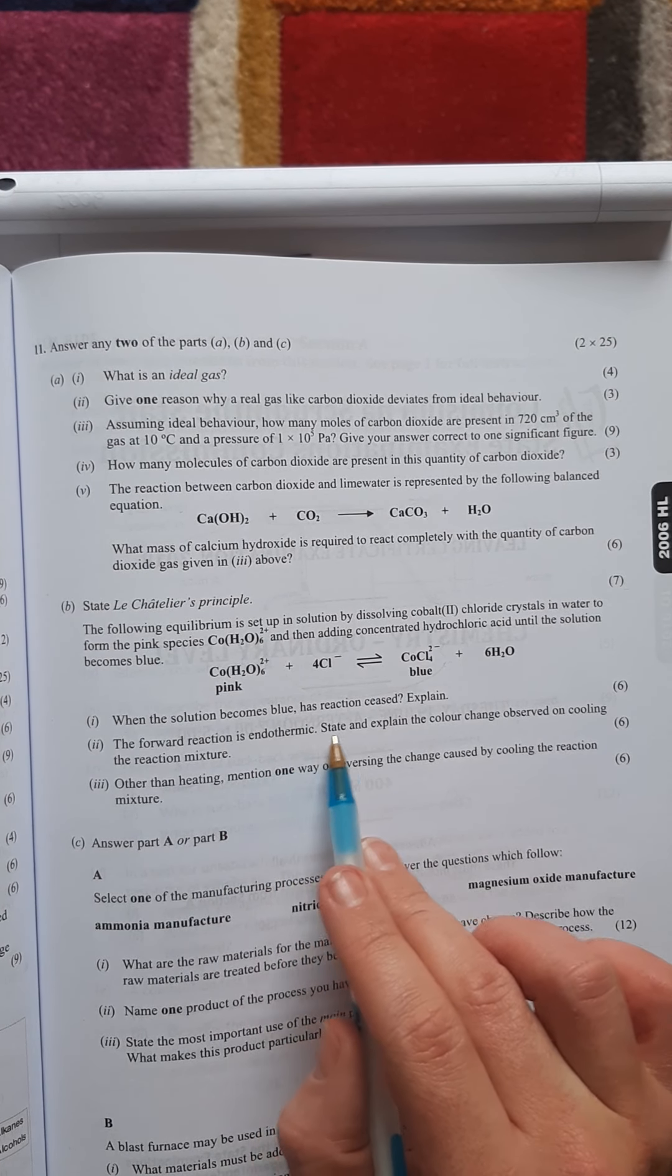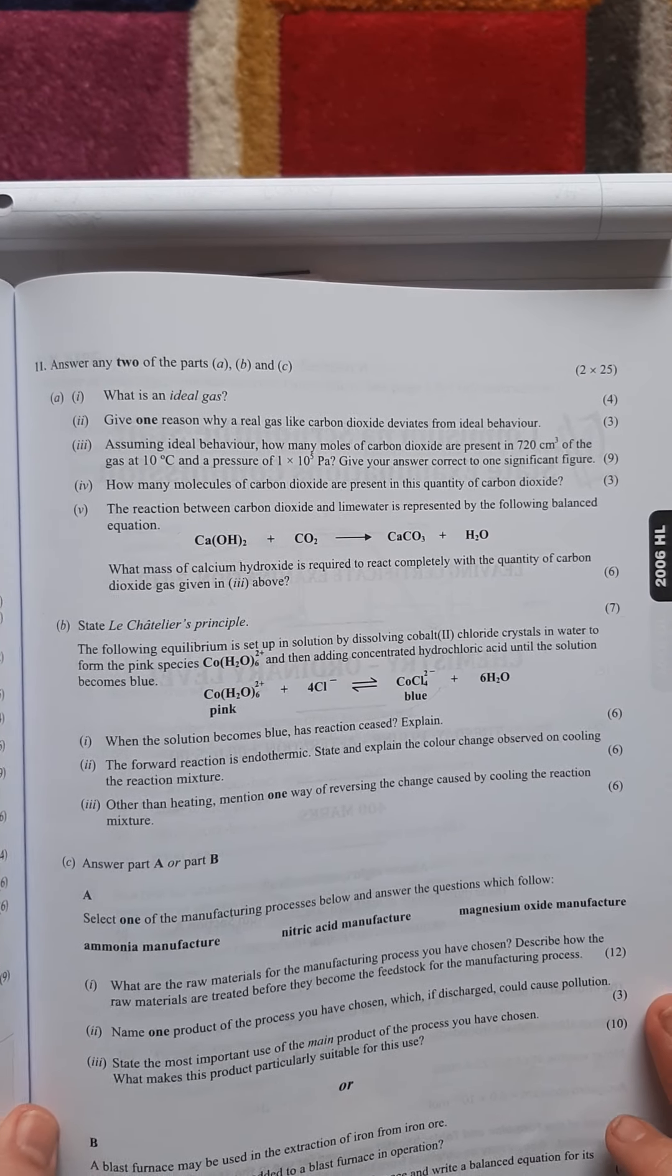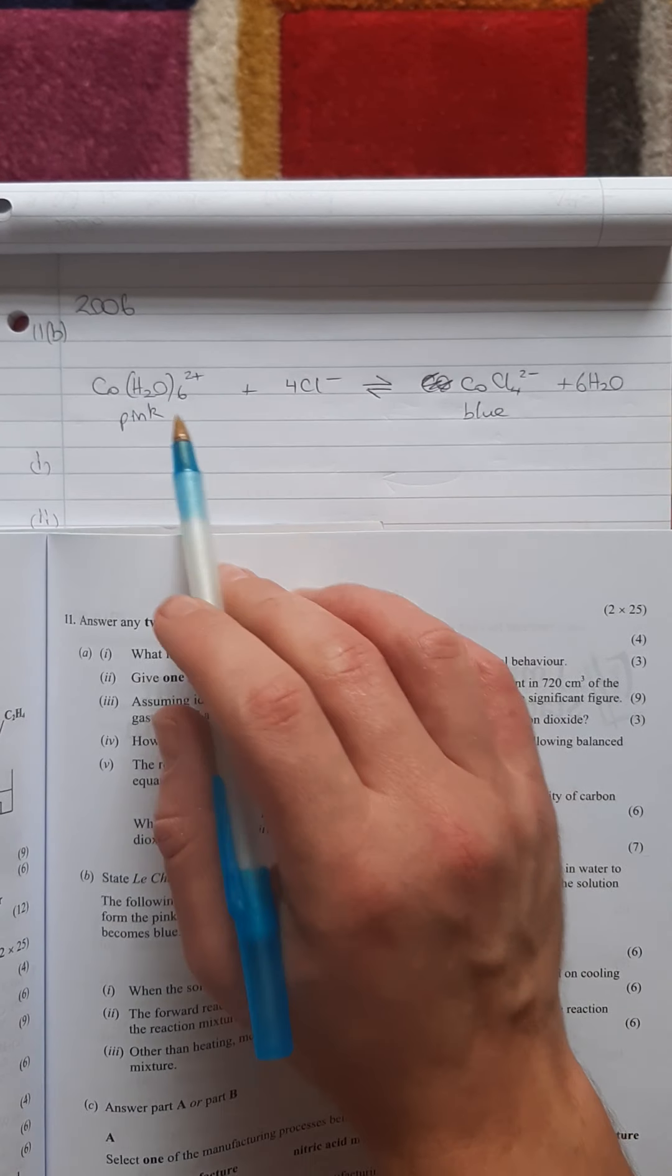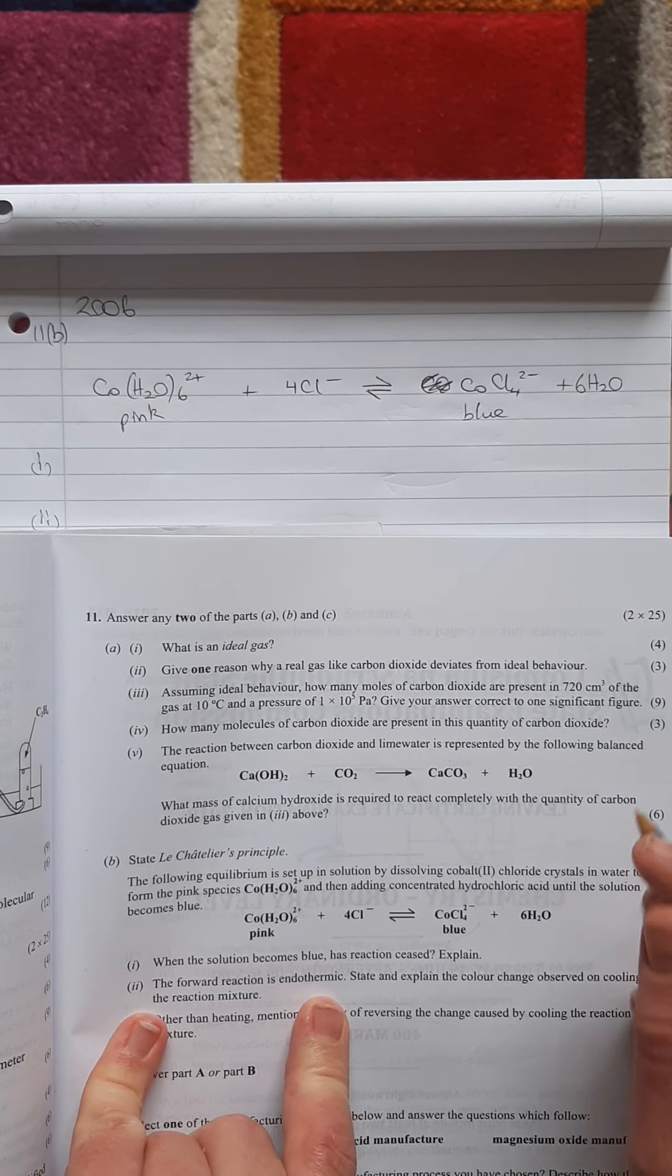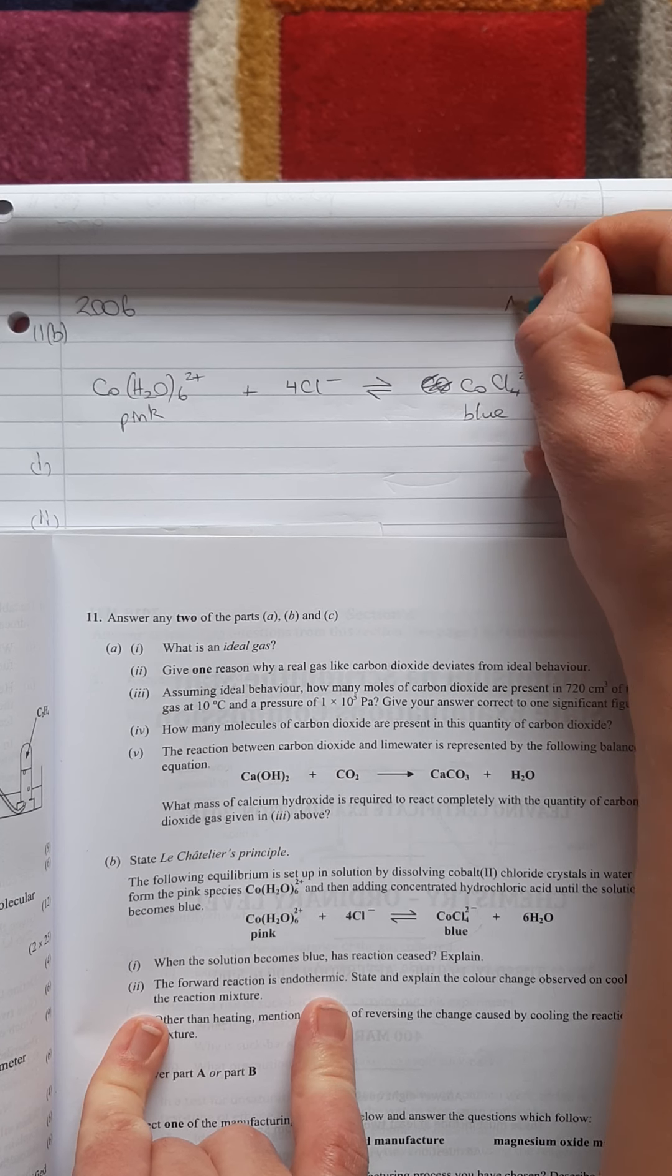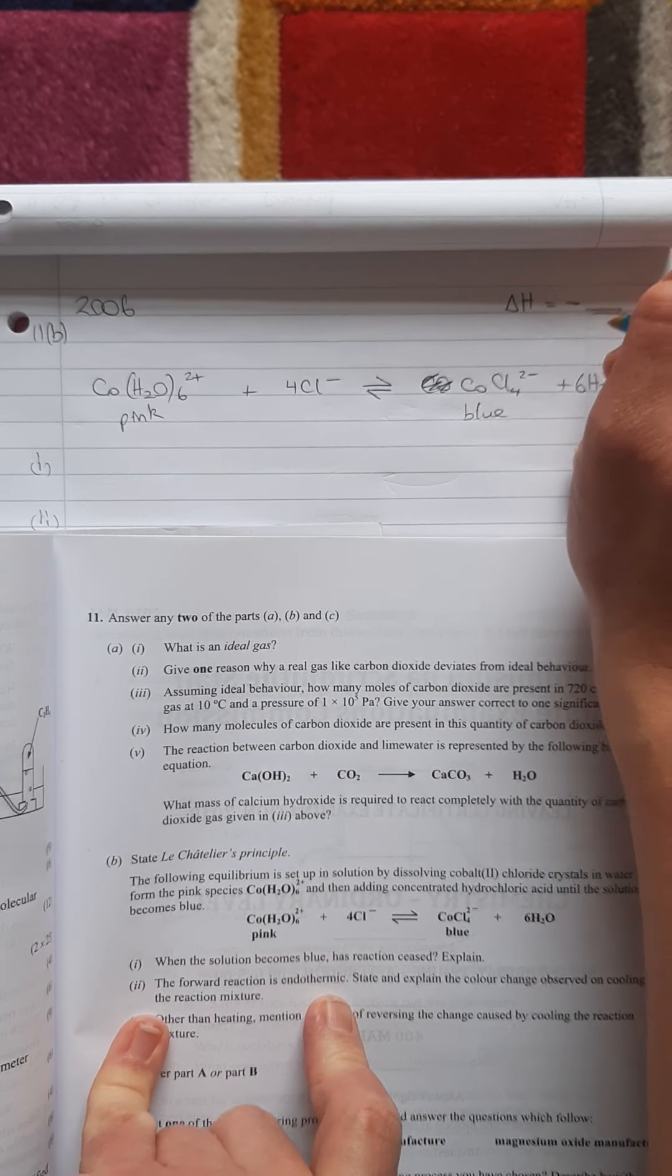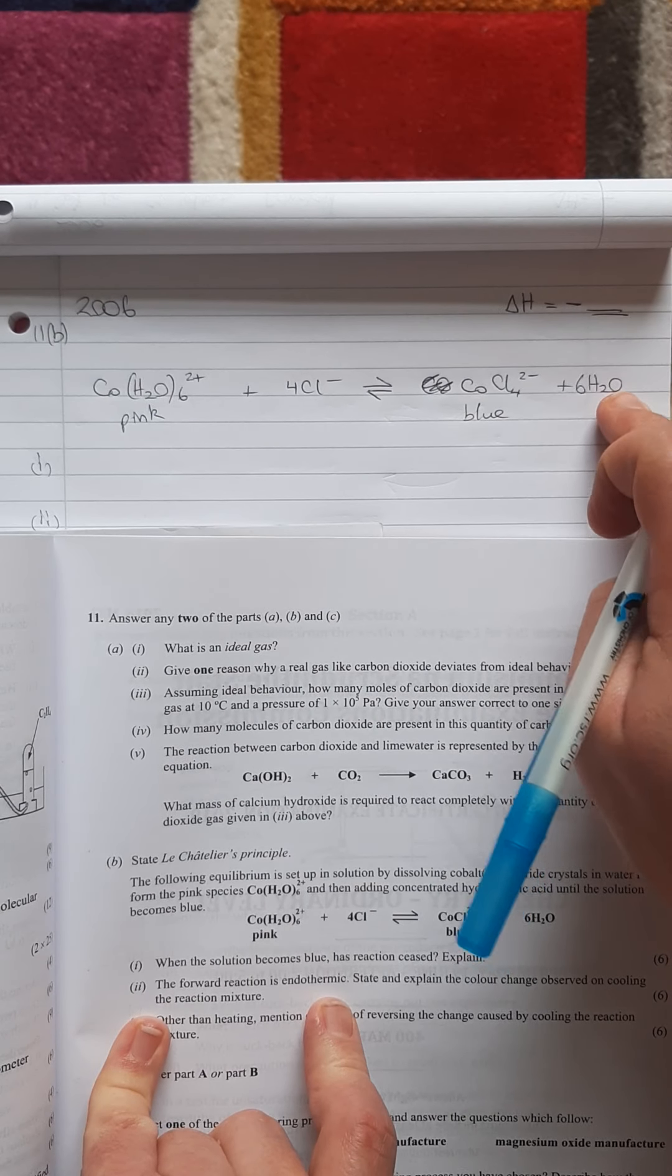For part two, the forwards reaction is endothermic. State and explain the color change observed on cooling the reaction mixture. Endothermic means that it takes in heat. I've just written out the equation so I can write on it. Most of the reactions we come across are actually exothermic, which means they give out heat. You would come across endothermic and exothermic reactions in the fuels chapter. When you have delta H negative it means it's giving out heat, it's exothermic.